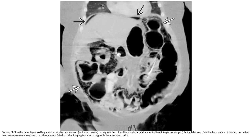Contrast and non-contrast CT in the same two-year-old boy shows extensive pneumatosis throughout the colon. There is also a small amount of free intraperitoneal gas. Despite the presence of free air, the patient was treated conservatively due to clinical status and lack of other imaging features of ischemia and obstruction.